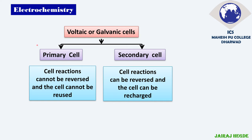Let us have a shortcut so we don't get confused. Primary stands for first — that means one — it can be used only once. Whereas secondary: second stands for two, so secondary cells can be used two times or more than two times. That means they can be used again and again by recharging.